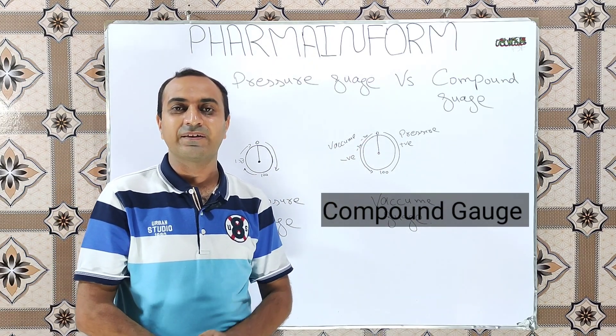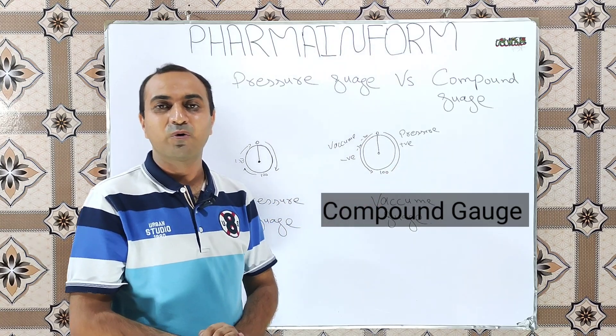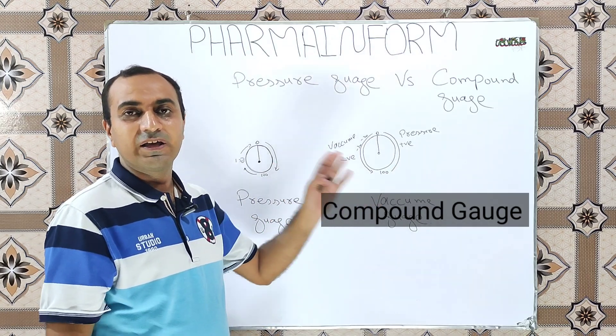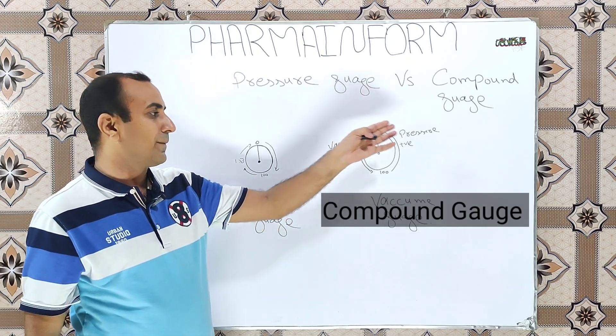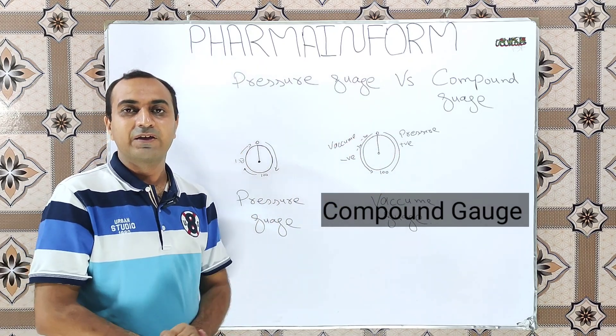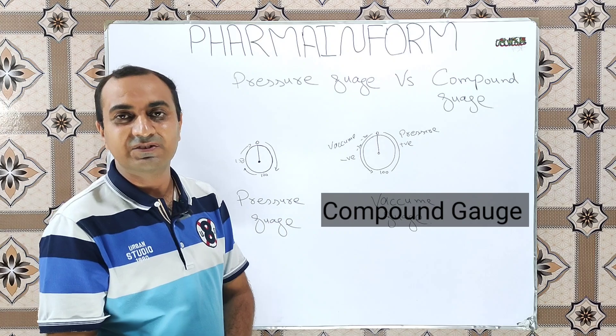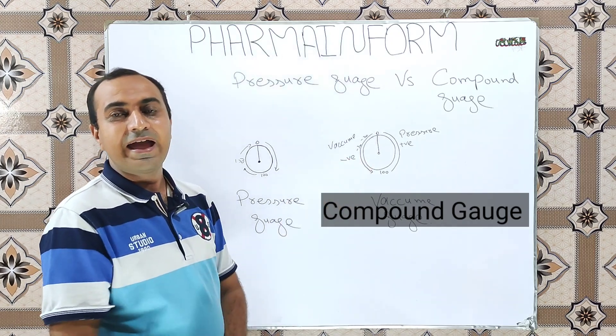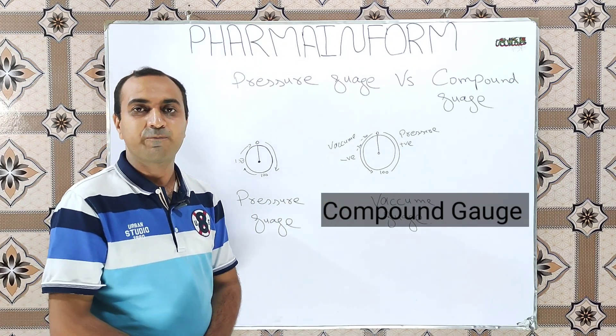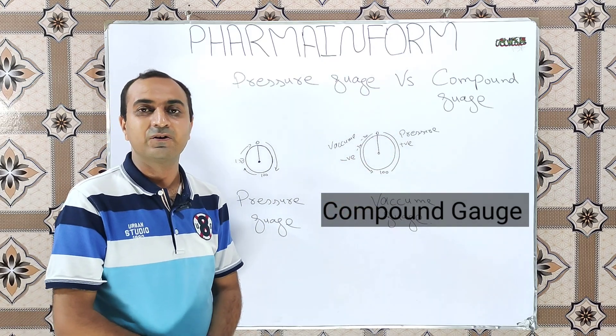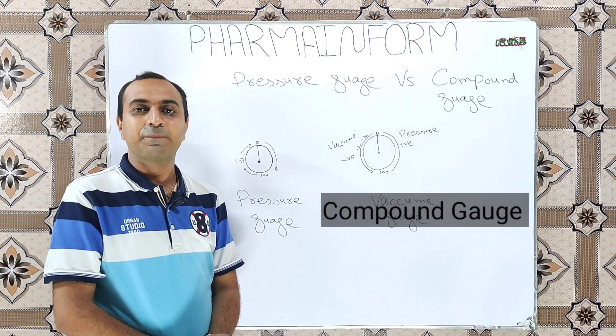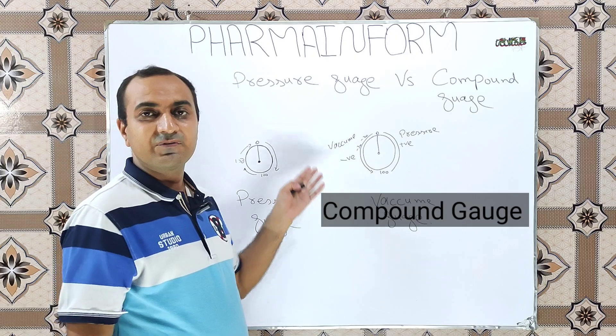Where is the compound gauge used? One of the most common examples of the installation of compound gauge is the autoclave. In autoclave we need the measurement of both the pressure and the vacuum. So compound gauge is installed on the autoclave. When we need the value of pressure, when we apply the pressure, it gives us the reading of pressure. And when we apply the vacuum, it gives us value of the vacuum.